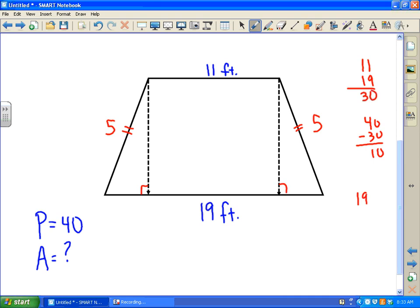Now if we subtract 19 minus 11, 19 minus 11, that is 8. And so we have 8 extra feet for the bottom base. So that means you have 4 here and 4 here.